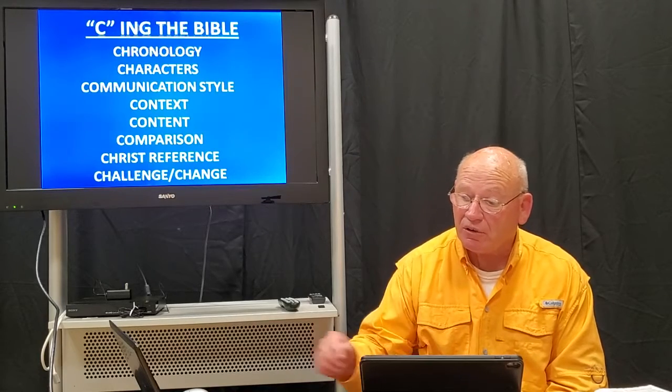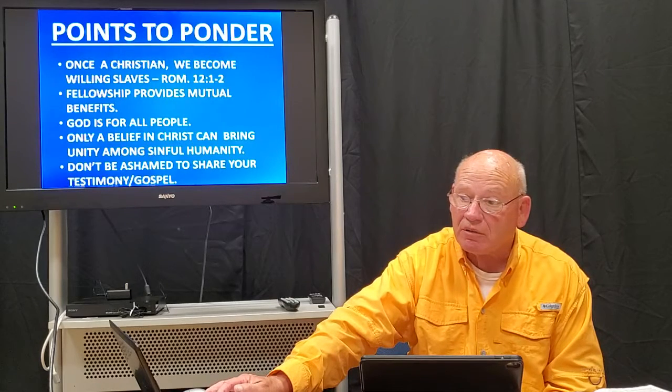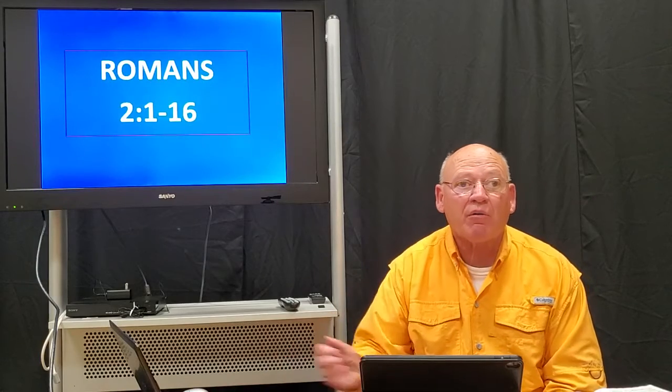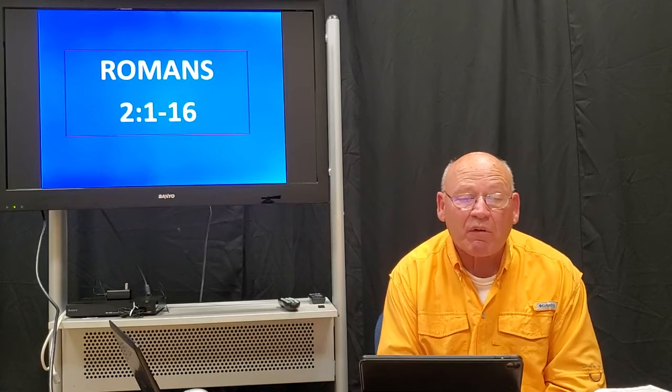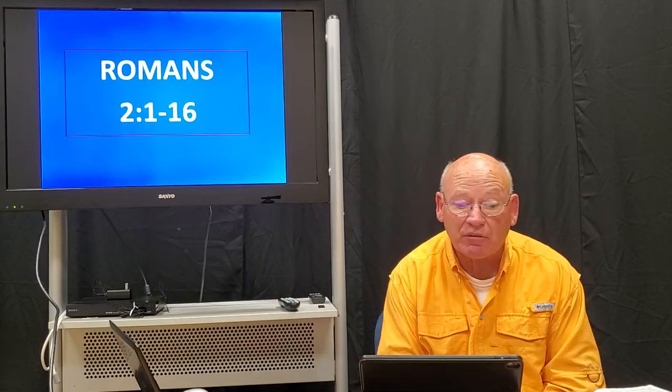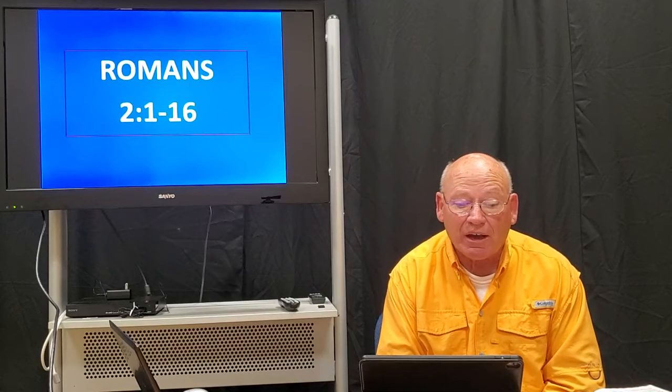We've done Romans 1 and the points to ponder there. Now we are embarking on Romans chapter 2, verses 1 through 16. As a review: Paul has explained at the end of chapter 1 that all mankind has the same general revelation of God, so he is without excuse and knows how he should live. But sin has made all man depraved, and he is subject to judgment because of that — he is disobedient to God.